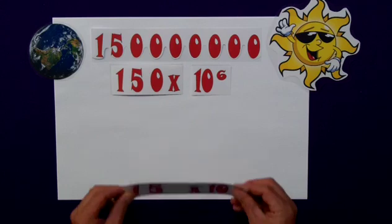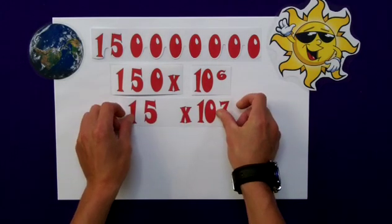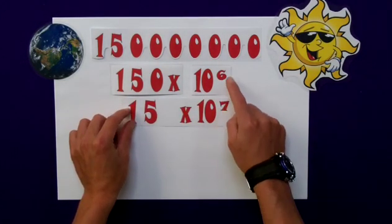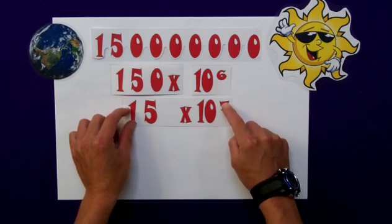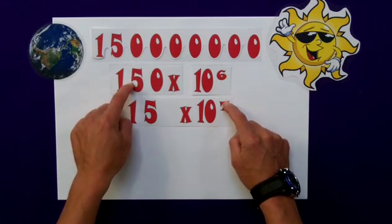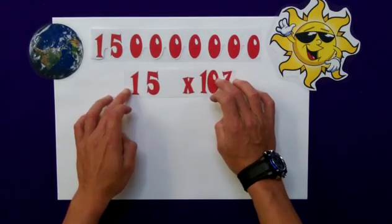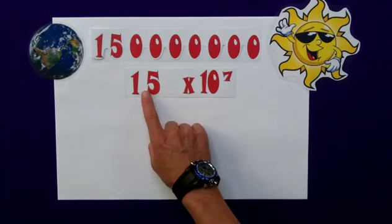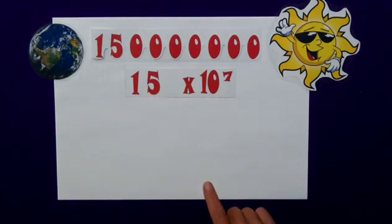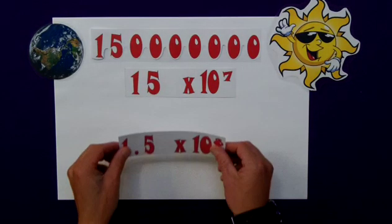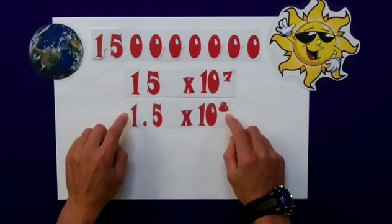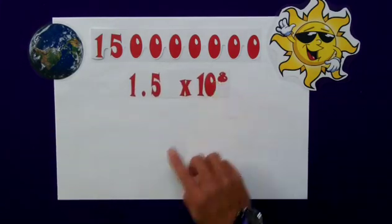Taking it a step back, I could write 15 times 10 to the 7. I've increased the indice by 1 and reduced this by a factor of 10. I'm getting closer now. That and that are the same number. This is closest to standard index form, but this 15 is clearly not between 1 and 10. So my final step would simply be to make it 1.5 times 10 to the 8.